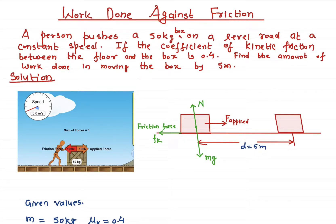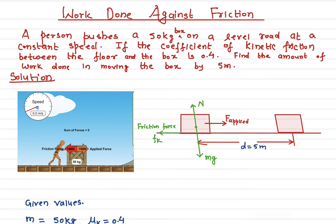In this video I will talk about how to calculate the work done by friction, or the work done against friction. We have an object with a force applied and a friction force as well. This object is moving with a constant speed — it could be two meters per second or five meters per second — as long as it is a constant speed.